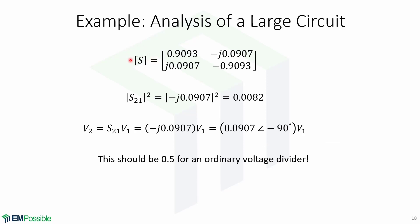Once we do all the calculations, we obtain these S parameters. Now if we square the magnitude of S21 and we get a coefficient of 0.0082, which is very, very small.